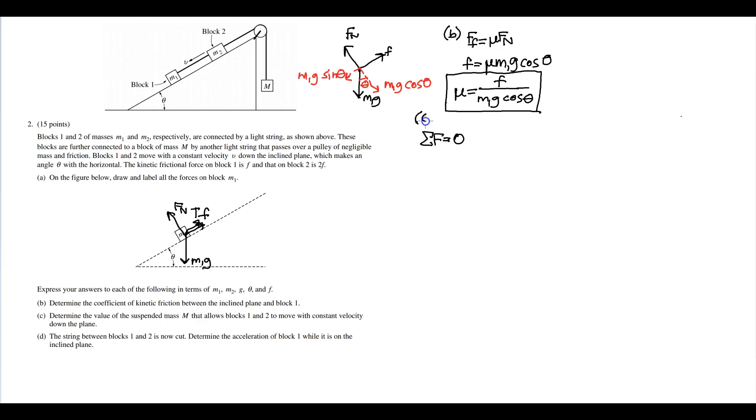So if we treat the entire system as one mass and only count the external forces on the system, we have—we're going to treat up the pulley and down the ramp as positive. That means the acceleration is zero.